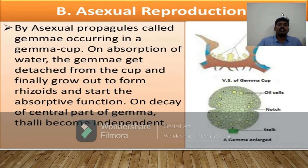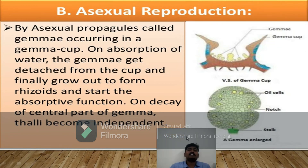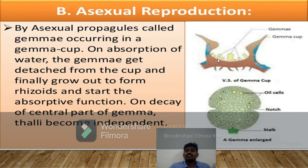Coming to asexual reproduction: asexual propagules called gemmae occur in gemma cups. On absorption of water, the gemmae get detached from the cup and grow out to form rhizoids and perform the absorption function. When we observe the gemma cups, these structures inside are called gemmae. When detached from the gemma cup, each gemma develops as a new, independent thallus.